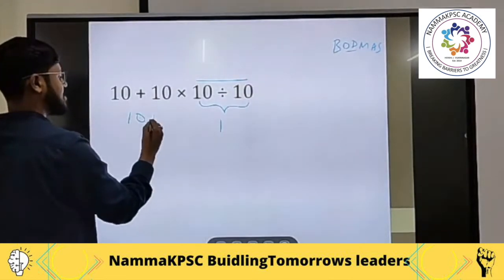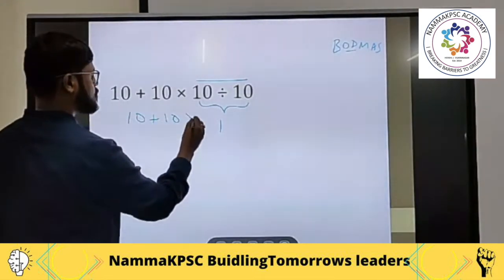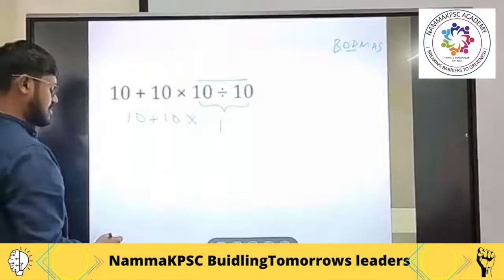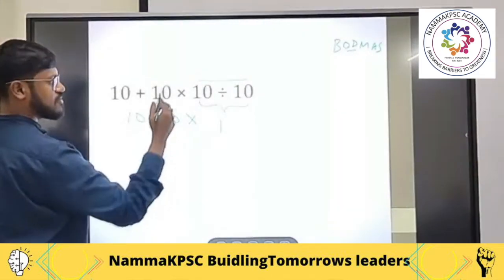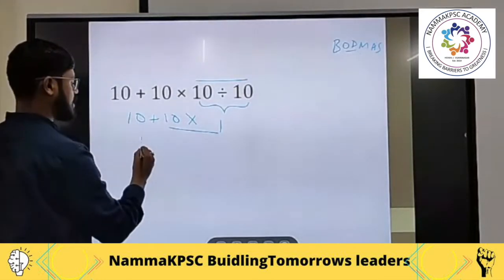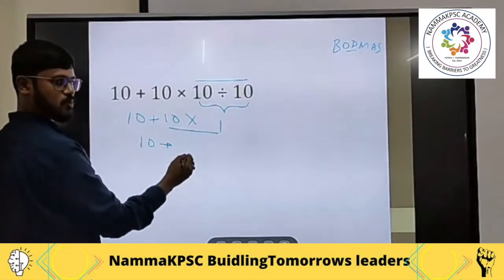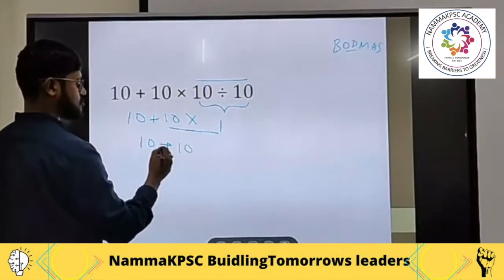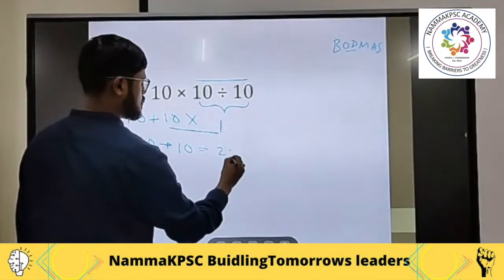We will just write down the equation as it is. 10 plus 10 into 1. The next step is what? Look for multiplication. Where is the multiplication? Here. 10 plus 10 into 1 is what? 10. So, 10 plus 10 is equal to 20.